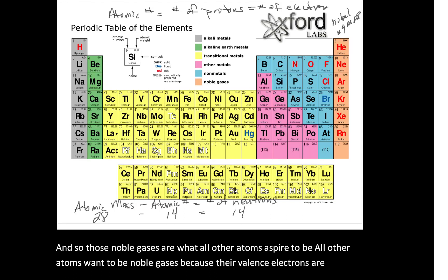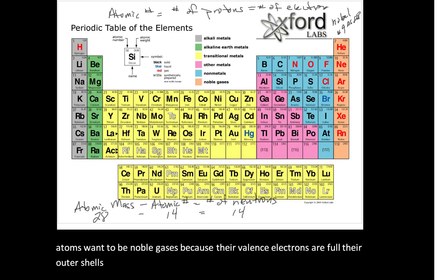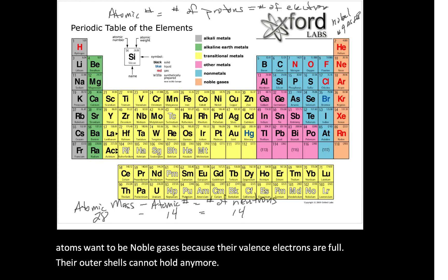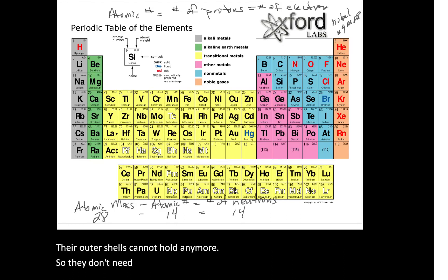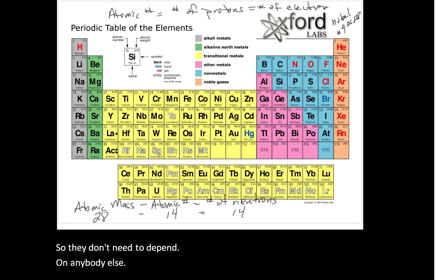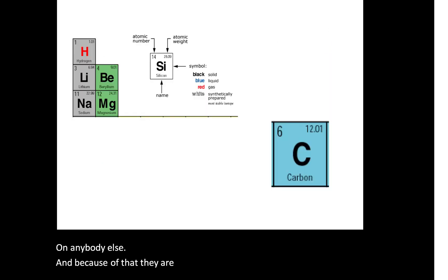Beryllium has two electrons in its outer shell — four altogether, two on the first, two on the second — and it desperately wants a full, stable outer shell. So it very typically gives away two electrons, because that drops it back down to only having two electrons, which is stable and full. Those noble gases are what all other atoms aspire to be — all other atoms want to be noble gases because their valence electrons are full, their outer shells cannot hold any more, so they don't need to depend on anybody else, and because of that they are not reactive.